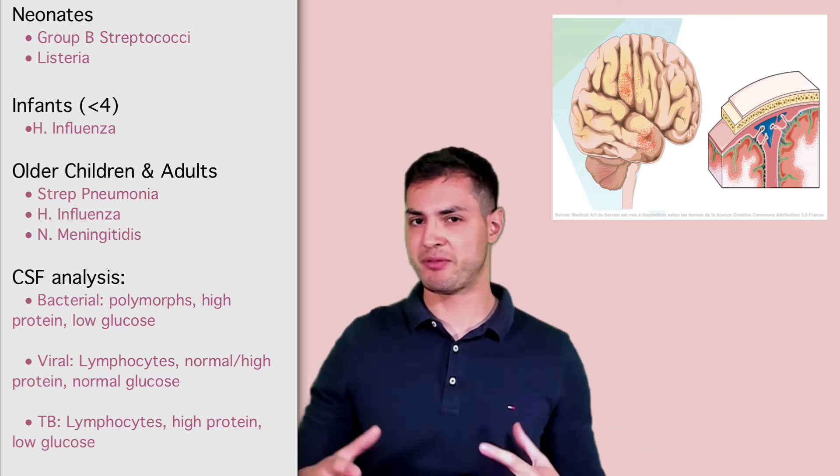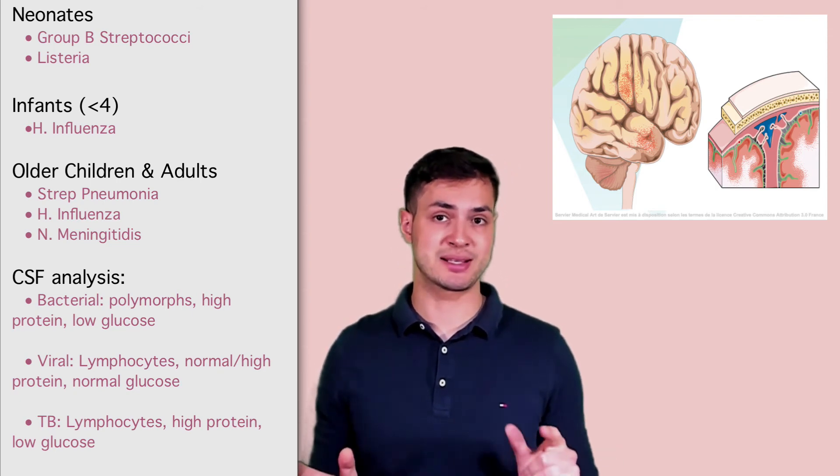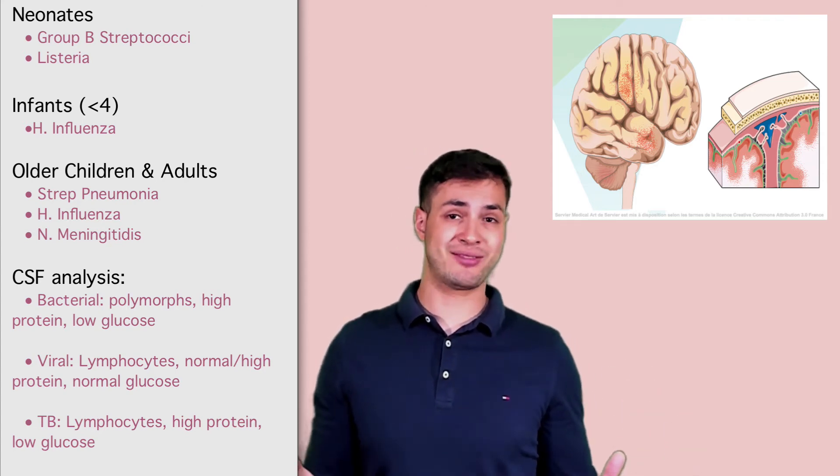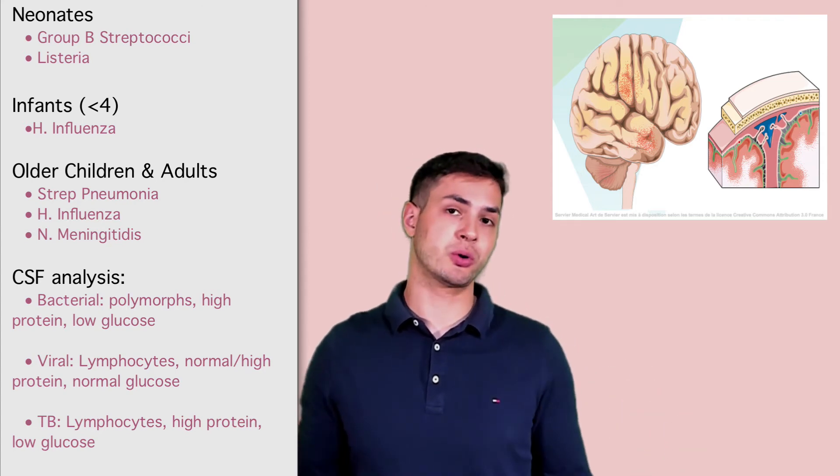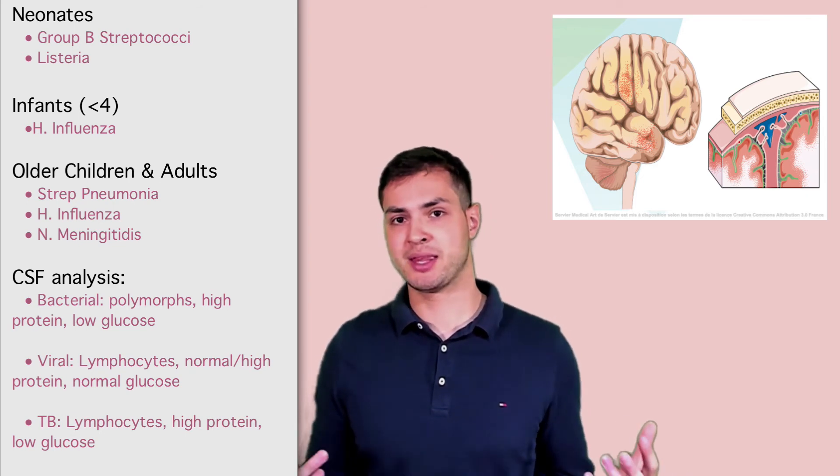Next one is TB. It's a bit of a mix. TB is going to be lymphocytes, surprisingly, and it's going to be high protein because it has protein, but it's going to have low glucose because the TB has eaten up all the glucose. So hopefully you find that useful because that will give you so many marks in the exam that you wouldn't usually get.